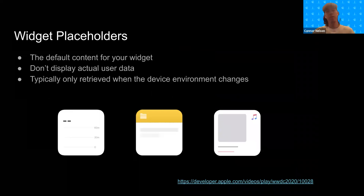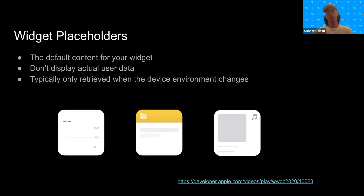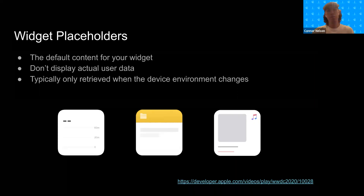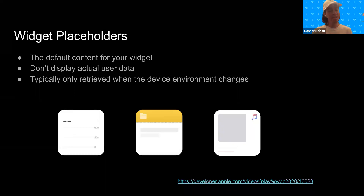Lastly, we have widget placeholders. This is the default content for your widget, as you can see in the screenshots. It doesn't display actual user data. Rather, it displays what your widget will look like without the user data, so you should not use any actual user data when setting up this placeholder. Typically, this is only retrieved when the device environment changes — for instance, when the user changes from light mode to dark mode.